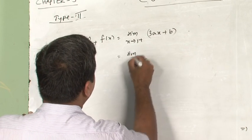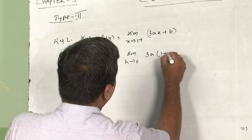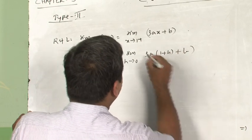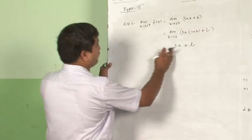Again I go for a simplification with the method we have already learnt in class 11th. 3A times 1 plus h plus B, thus putting h is equal to 0, it is going to be 3A plus B. Well we have stopped at this particular point.